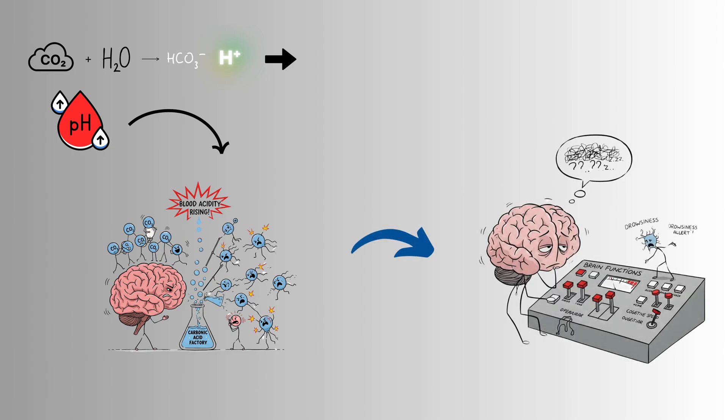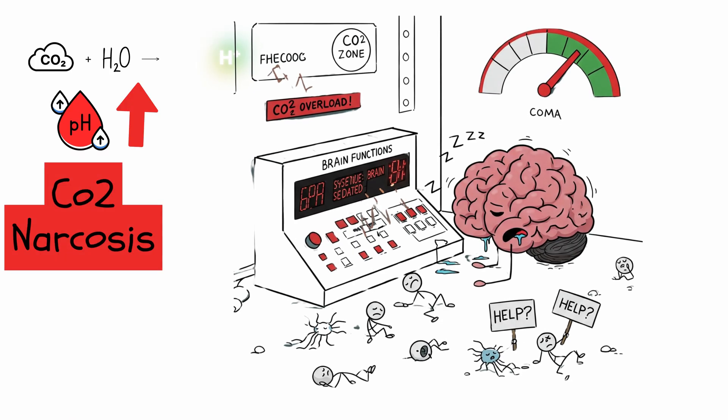As CO2 levels climb, neurological symptoms become more pronounced, including confusion, disorientation, and irritability. The impaired ion balance can slow nerve impulse transmission, leading to slower reaction times and cognitive difficulties. In severe cases, CO2 narcosis can occur.